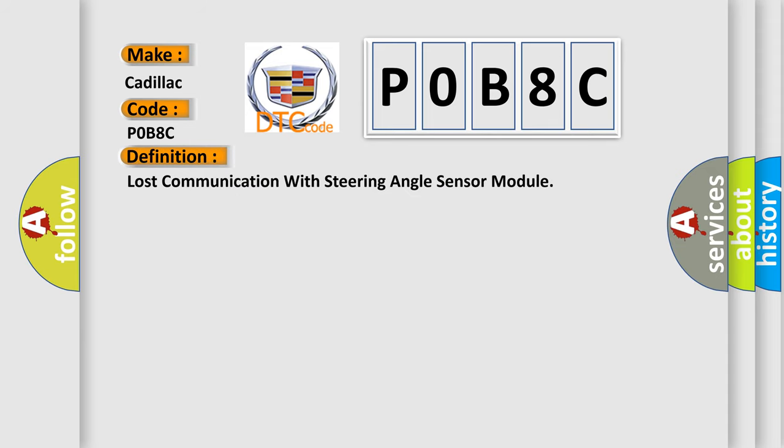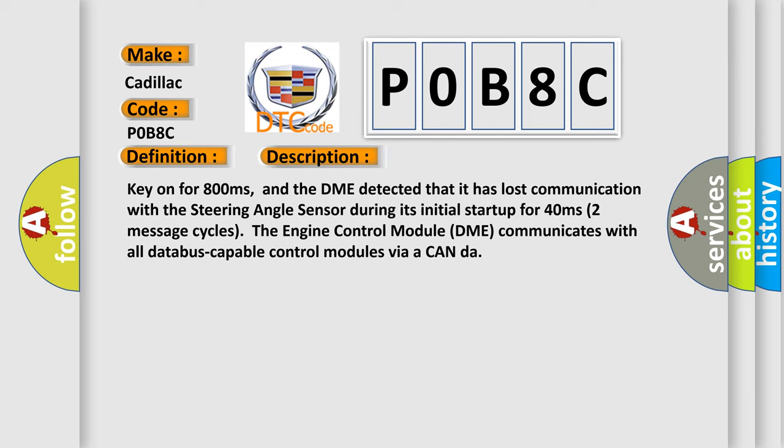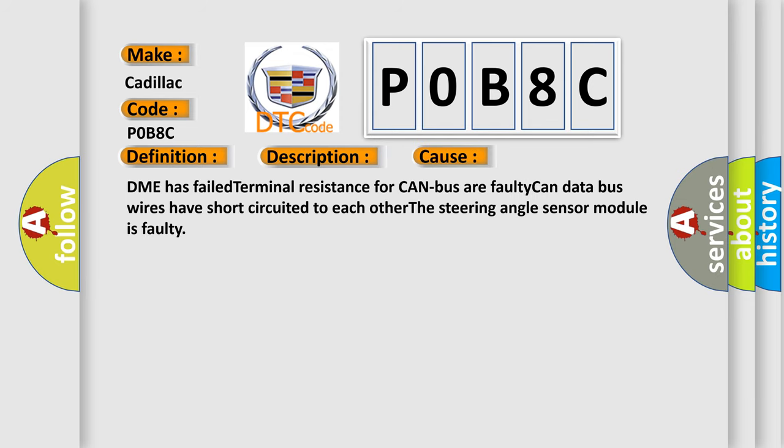The basic definition is: Lost communication with steering angle sensor module. Key on for 800 milliseconds, and the DME detected that it has lost communication with the steering angle sensor during its initial start-up for 40 milliseconds. Over two message cycles, the engine control module DME communicates with all CAN-bus-capable control modules via CAN-DAR. This diagnostic error occurs most often in these cases: DME has failed terminal resistance for CAN bus, faulty CAN data bus wires have short-circuited to each other, or the steering angle sensor module is faulty.